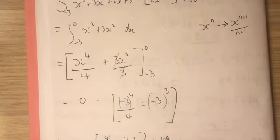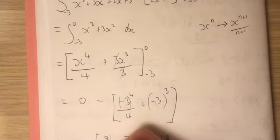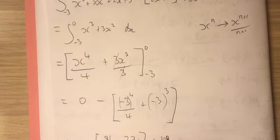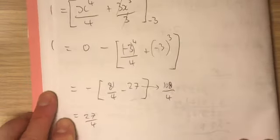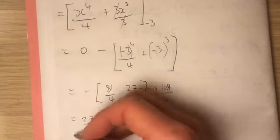Again, what a coincidence. So I've ended up with, this would be negative inside, another negative. So 27 over 4 is my area at the end of the day. There we go.